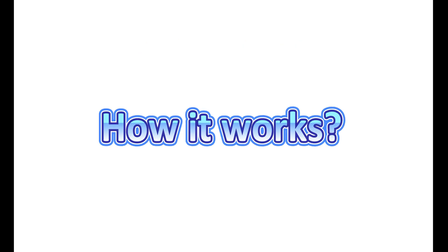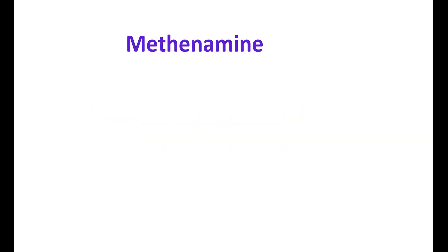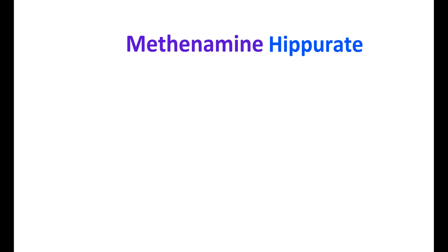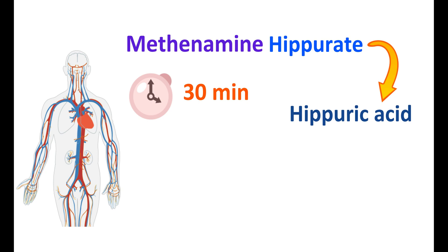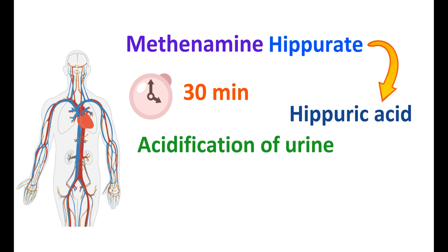First of all, let us see how methenamine works. Methenamine can be given in the form of its salt, either hippurate or mandelate. Both of these salts are readily absorbed into the body and can reach the urine within 30 minutes. In the urine they are going to be hydrolyzed to release the acidic part. In case of methenamine hippurate, hippuric acid is released, resulting in acidification of the urine and decreased urinary pH. Methenamine is mainly hydrolyzed within the urine, therefore it acts on bacteria in the urine and is used for urinary tract infections.